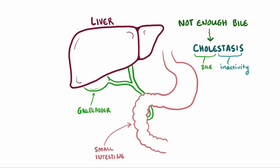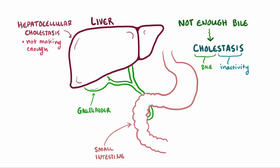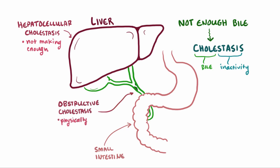This reduction in bile flow can basically be split into two types: hepatocellular cholestasis, where for some reason the hepatocytes aren't making enough bile, and obstructive cholestasis, where something's physically blocking the flow of bile.